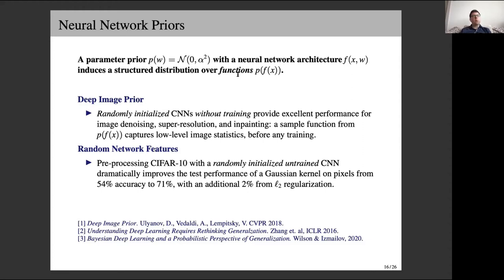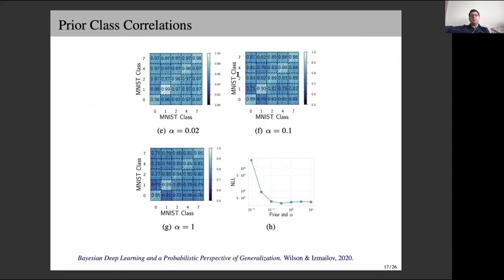It's quite standard to use an N(0, alpha^2 * I) prior when doing Bayesian deep learning. I would argue there's a lot of evidence this is not a particularly unreasonable prior — surely it's misspecified in various ways, but not nearly as problematic as often assumed. There was a paper called the Deep Image Prior showing that randomly initialized CNNs without training can provide really good performance for vision tasks like image denoising, super resolution, and inpainting, suggesting that sample functions from our induced distribution over functions capture low-level image statistics before any training.